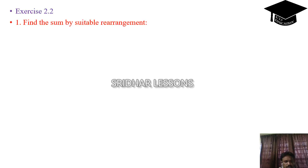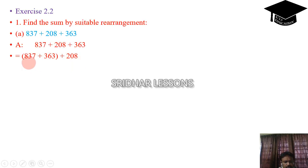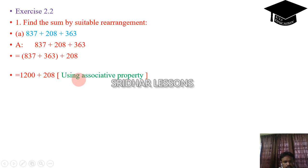Exercise 2.2, first sum: Find the sum by suitable rearrangement. 837 plus 208 plus 263. We can add these 3 numbers, but for simplicity we rearrange as 837 plus 263 plus 208. Adding 837 and 263 gives 1100, plus 208. Using the associative property, it is very simple to add 1100 plus 208, giving 1308.